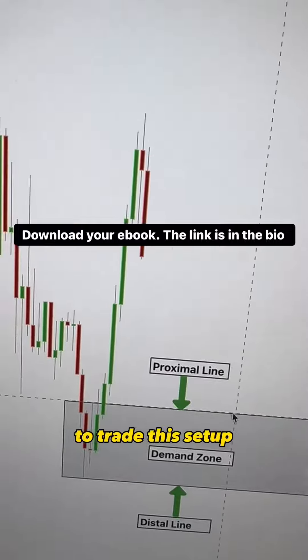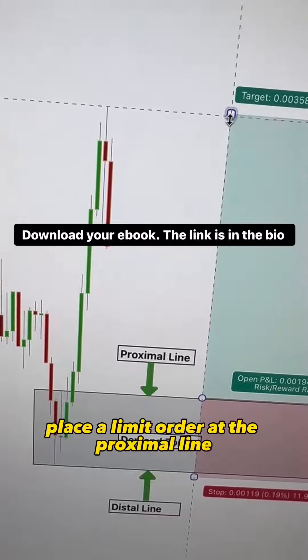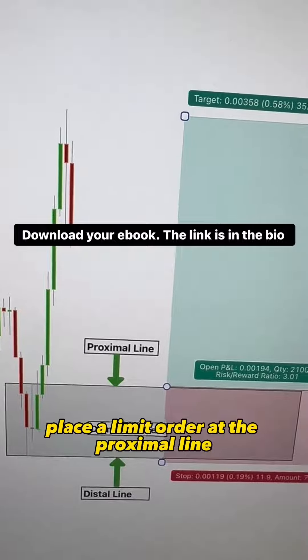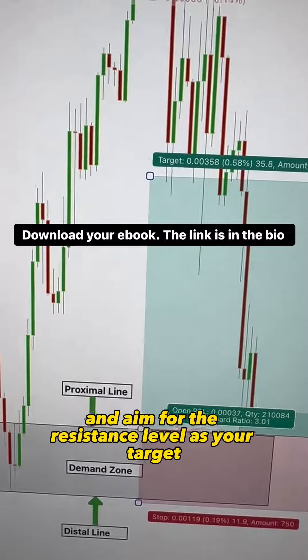To trade this setup, draw the demand zone on the doji candle, which acts as the basing candle. Place a limit order at the proximal line, set your stop loss below the distal line, and aim for the resistance level as your target.